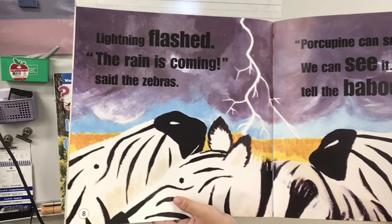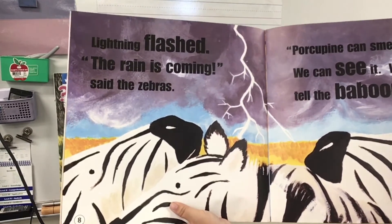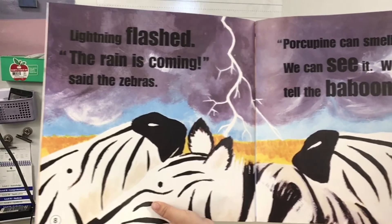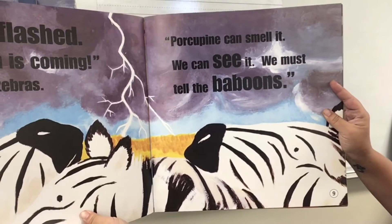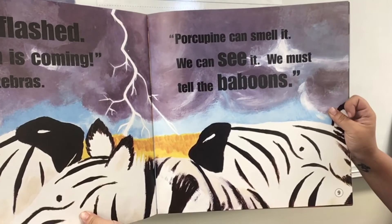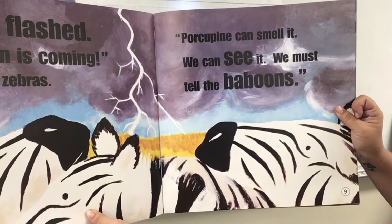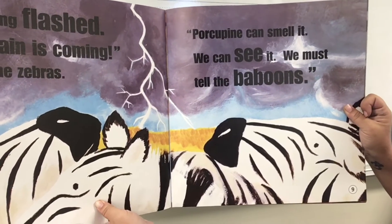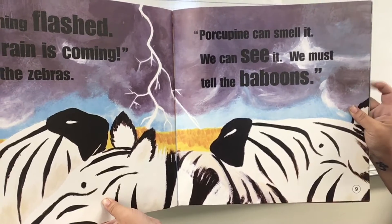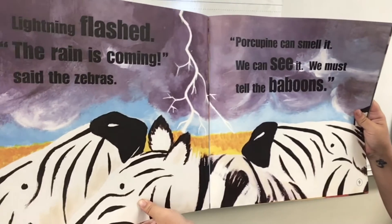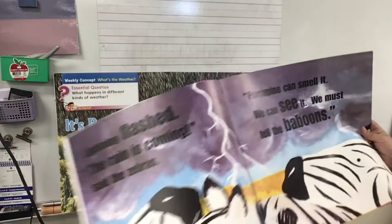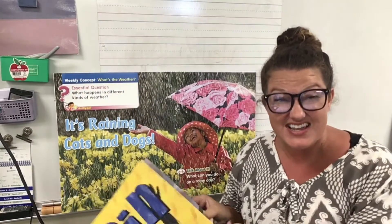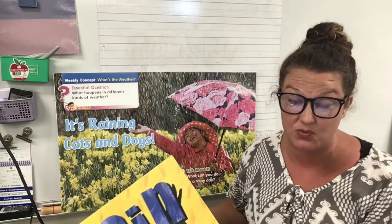Lightning flashed. 'The rain is coming,' said the zebras. 'Porcupine can smell it. We can see it. We must tell the baboons.' And as I'm reading, I notice all the spaces between each word — it makes it a lot easier to read. We can't forget to put the spaces between words.